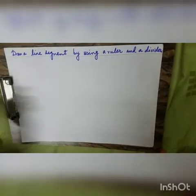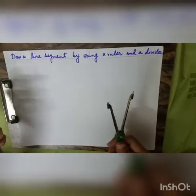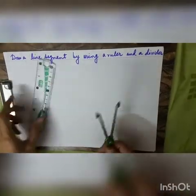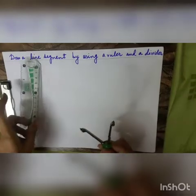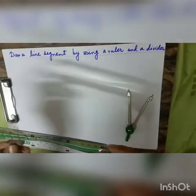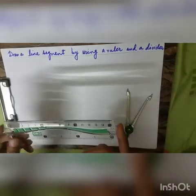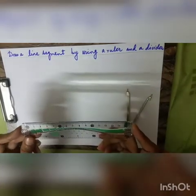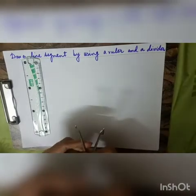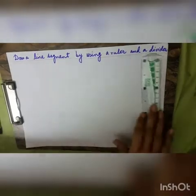The question arises: why do we need a divider to compare the length of a line segment when we can use a ruler for this purpose? The reason is that a ruler does not give an accurate reading — it does not measure the exact reading due to positioning error. So we use a divider to measure the accurate reading.